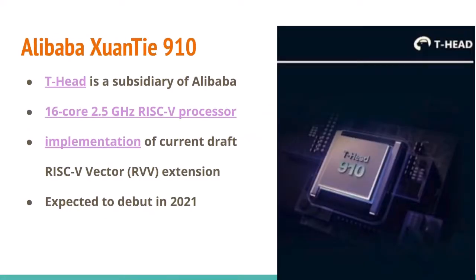The most impressive RISC-V chip I know of coming soon is from Alibaba. Alibaba has a chip design division called T-Head, and they've created a 16-core 2.5 GHz RISC-V processor. There was an interesting paper at Hot Chips about it. It implements the current draft of the vector extension, meaning it could handle AI workloads like inference and matrix operations. It's expected to debut next year, possibly with a dev board as well.